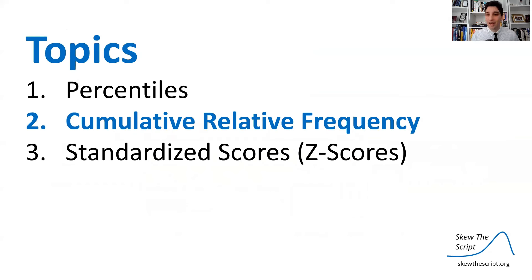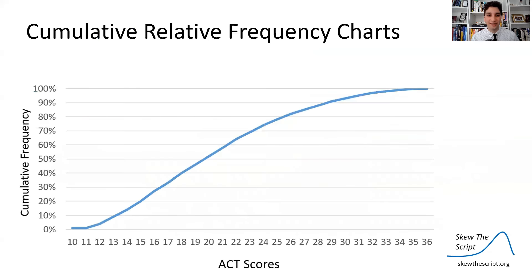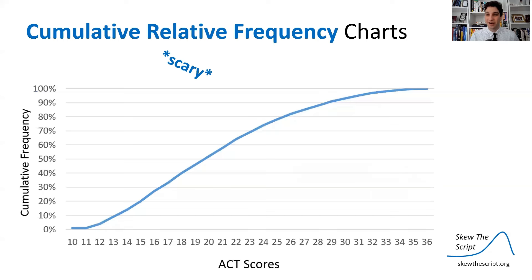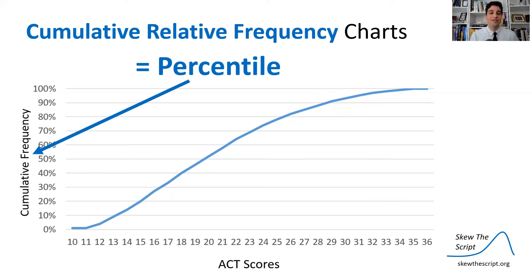Now here's another topic we're going to discuss before we get to our main topic of z-scores and the NBA: cumulative relative frequencies. On the AP exam and out in the world, you might come across cumulative relative frequency charts — it's a very intimidating name, but just think of it like this: cumulative relative frequency is the same thing as percentile. These are just percentile charts. You can take that y-axis and instead of cumulative relative frequency, just think of it as percentile. Here's a percentile chart of ACT scores.